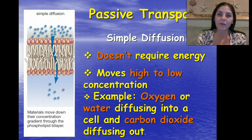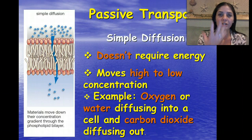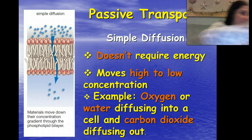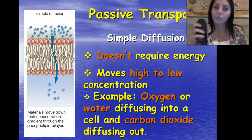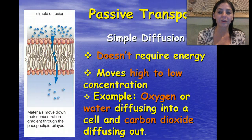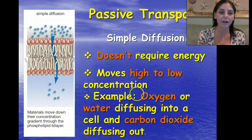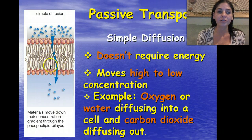First off, we have simple diffusion. That would be like when I put a drop of food coloring in a beaker and eventually it's going to diffuse from a high concentration to a low one. Just like when I sprayed Axe at the very front of my room, it's going to diffuse to the back of my room eventually. It moves from high to low concentration. An example would be oxygen or water diffusing into a cell and carbon dioxide diffusing out.